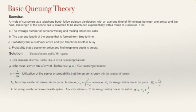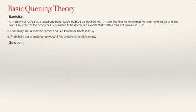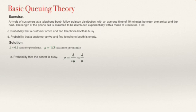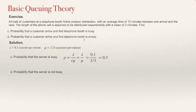Solving question C: the probability that the customer arrives and finds the telephone booth busy. We know lambda equals 0.1 customers per minute and mu equals 1/3 customers per minute. Using rho equals lambda over C·mu with C equals 1: rho equals 0.1 divided by 1/3, which equals 0.3. So the answer to question C is rho equals 0.3. For question D, the probability that the telephone booth is empty is 1 minus rho, which equals 1 minus 0.3 equals 0.7.